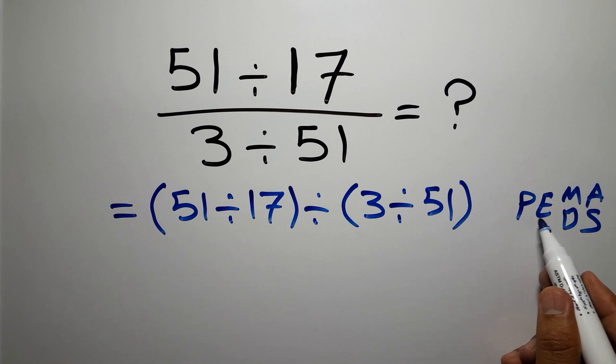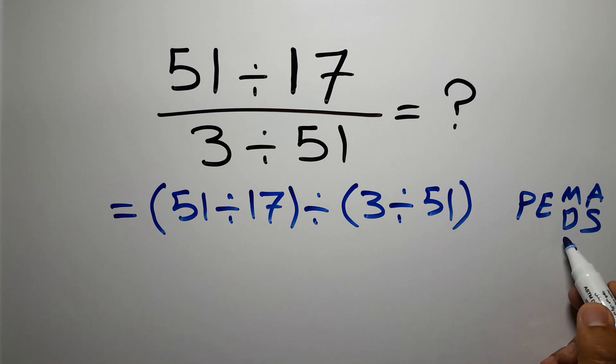First, we have to do parentheses, then exponents, then multiplication or division, and finally addition or subtraction. Remember that multiplication and division have equal priority, and we have to work from left to right, and the same applies to addition and subtraction.